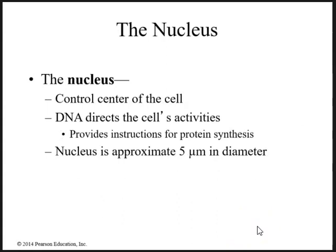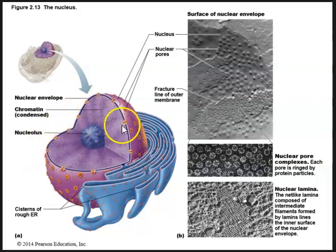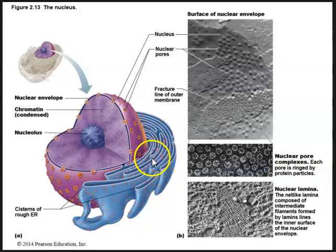The next very important organelle is the nucleus — the control center of the cell. DNA directs the cell's activities and is contained within the nucleus. DNA is important for providing instructions for protein synthesis. We get our DNA from our parents, and protein synthesis directs things such as eye color, hair color, and all sorts of traits that we get from our parents. Here we see the nucleus — not usually purple, but shown in purple in this figure — as well as the nucleolus, surrounded by cisterns of the rough ER, which contains ribosomes important in protein synthesis.